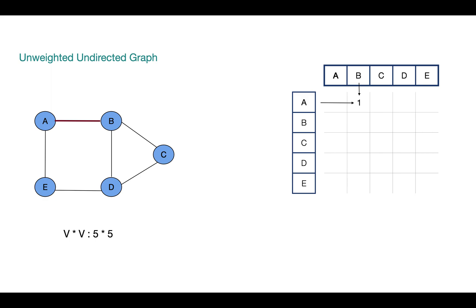So this cell will be having value one. Similarly, we do have it from B to A. So the cell for B to A will also be having this value. And this is true for all the edges in this graph. And the absence of edges is represented using zeros.